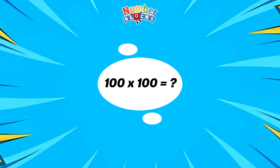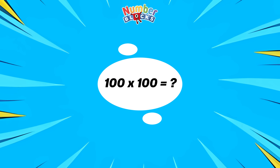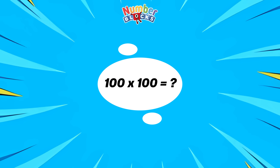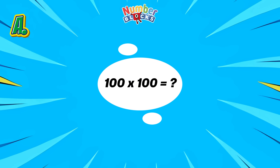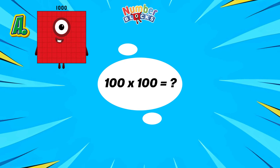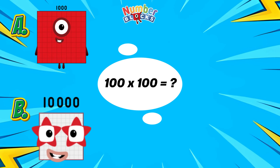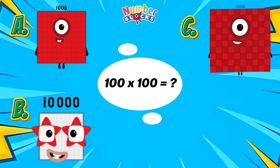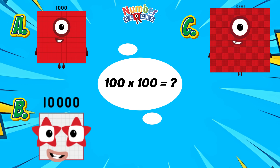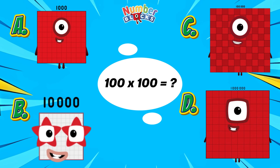Next, 100 multiplied by 100 is equals to... A, 1,000. B, 10,000. C, 100,000. Or letter D, 1,000.